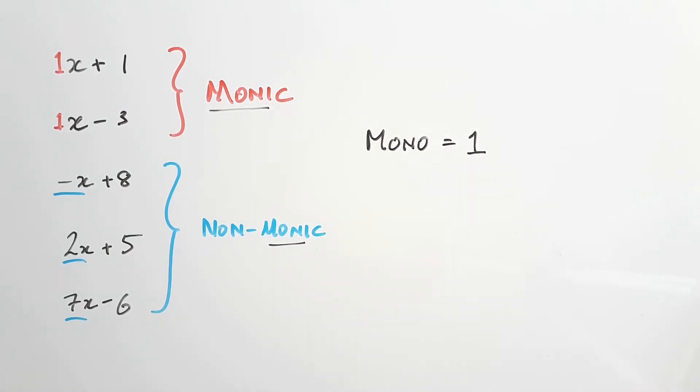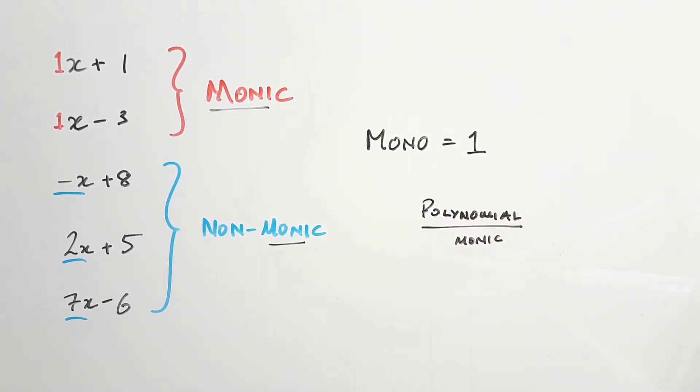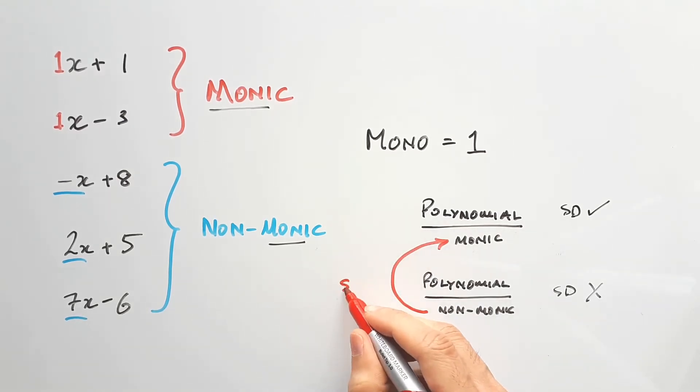As I mentioned in my previous video, synthetic division can only be done when your polynomial divides a monic expression. So if you divide a polynomial by a non-monic, technically you can't use synthetic division. But there is a technique to turn a non-monic into a monic so that synthetic division can work. So let's have a look at how this works in today's video and do some synthetic division with it.